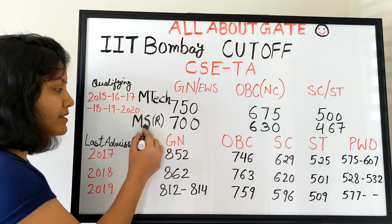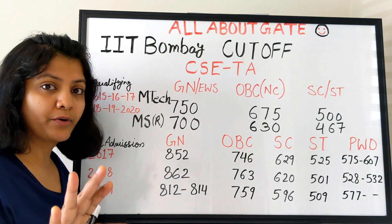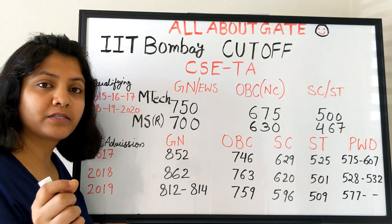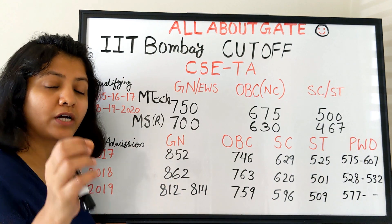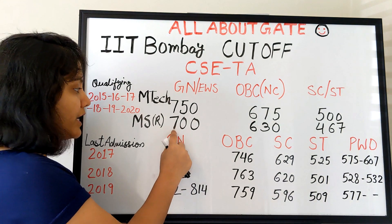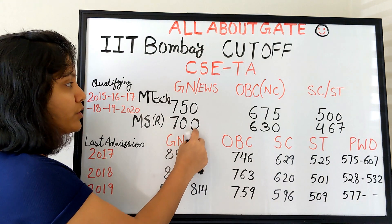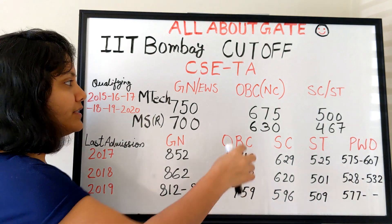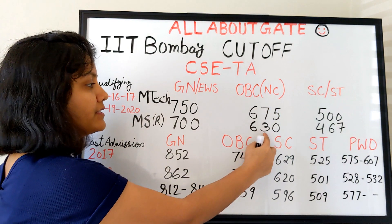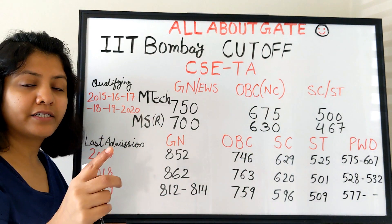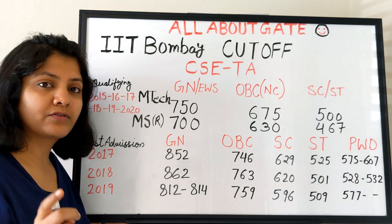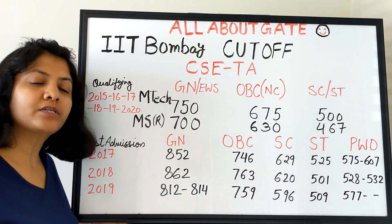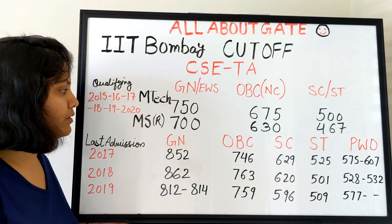For the new MS by Research program under the TA category, a General or EWS student should have a GATE score of 700 to apply. For OBC non-creamy layer, it is 630. For SC/ST, it is 467. Now let's look at the last admission obtained GATE scores.